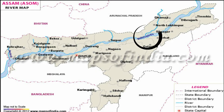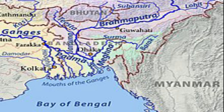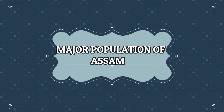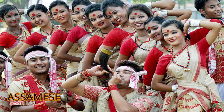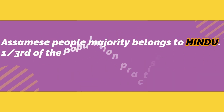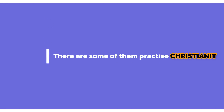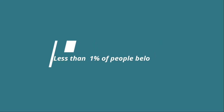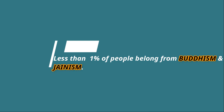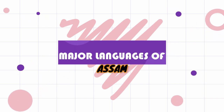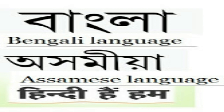The river Brahmaputra flows through the state, and a very small portion of the Barak river valley lies within Assam's borders. The people of Assam are called Assamese. The majority belongs to Hinduism, one-third of the population practices Islam, and some practice Christianity. Less than one percent belong to Buddhism and Jainism. The Bodo constitute the largest of the scheduled tribes. The major languages spoken in Assam are Bengali and Assamese.